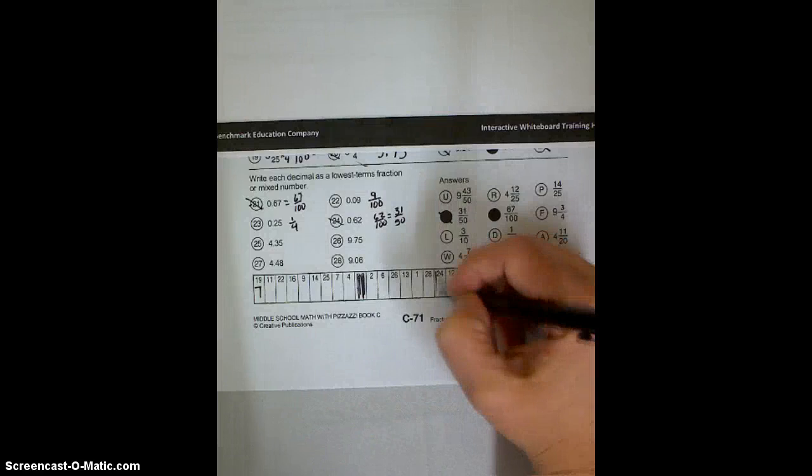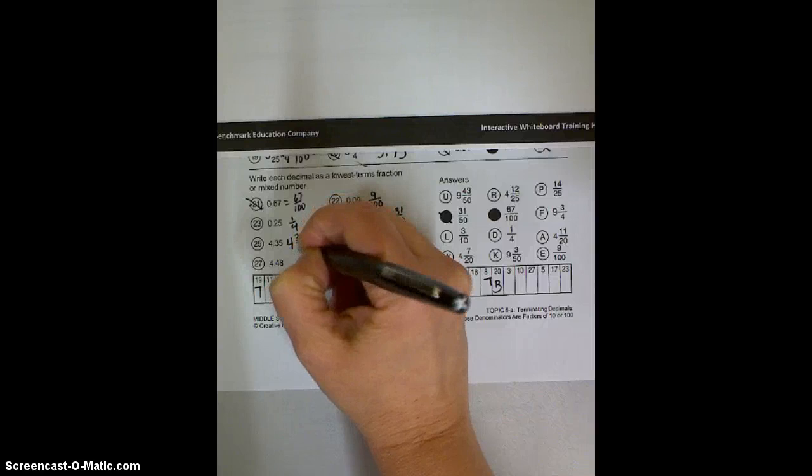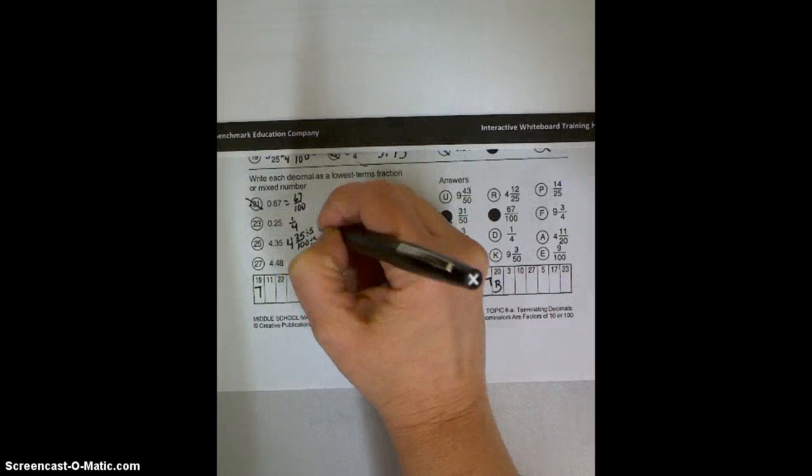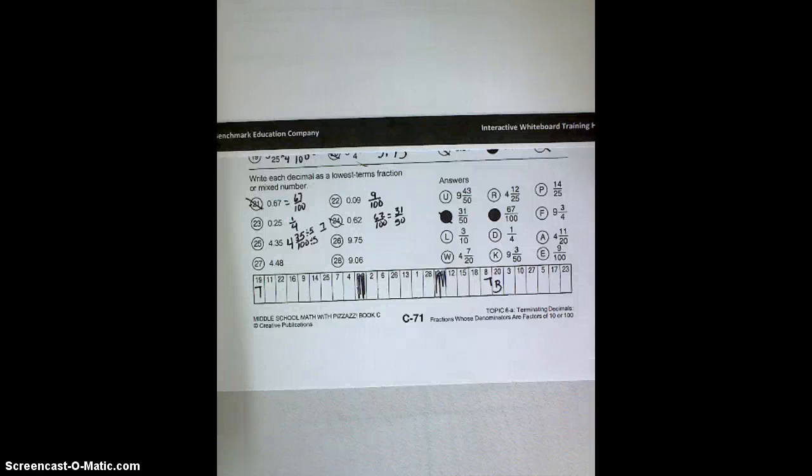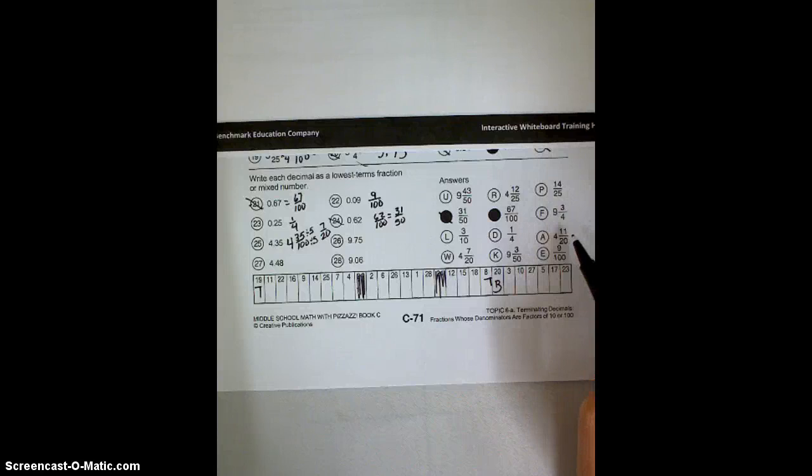4 and 35 over 100, which will need to be reduced. Divide them both by 5 over 5, and you would get 7 twentieths. So we should be able to find 4 and 7 twentieths over here, I hope, if I did it right. Oh, there it is. 4 and 7 twentieths is a W. So yep, we've got that one.